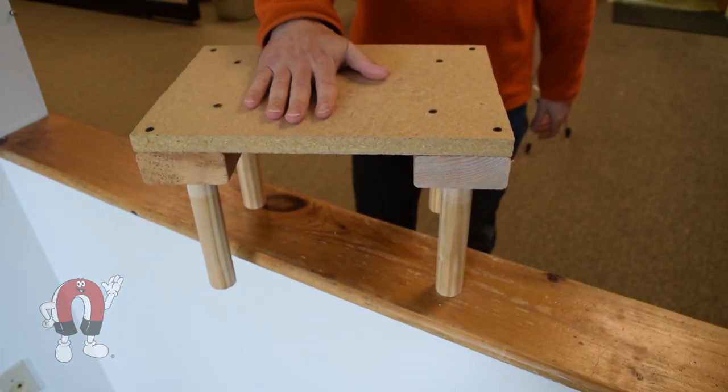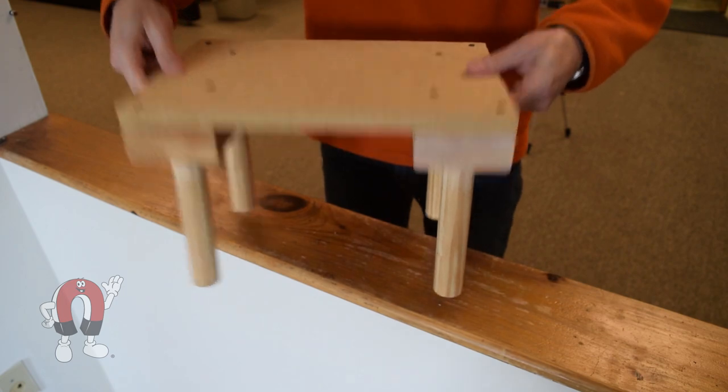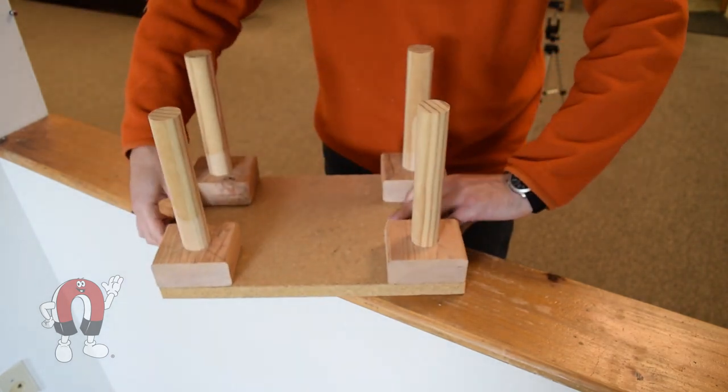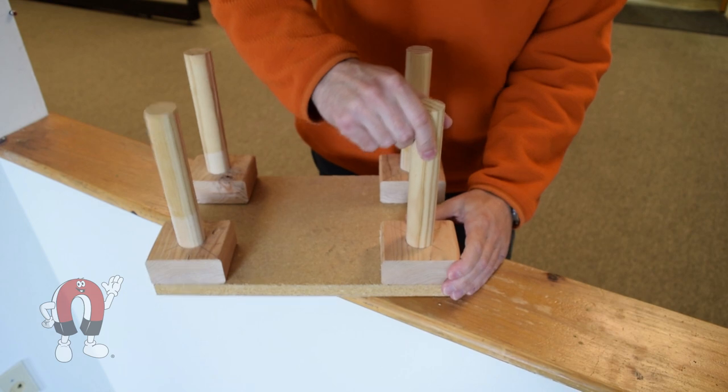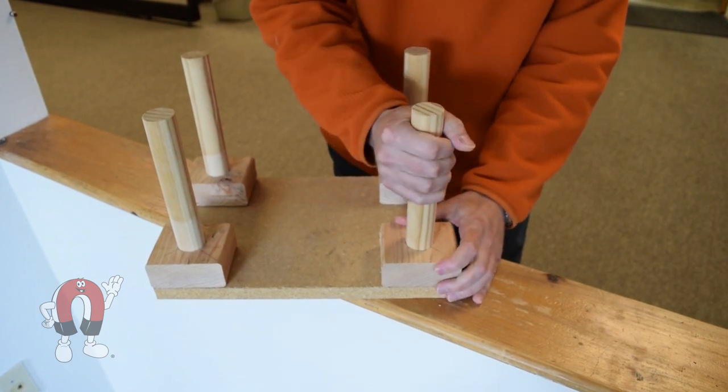This arrangement requires the same amount of pull force to pull those legs straight up away from the stool's top, but those collar pieces prevent the easy tipping problem we had before.